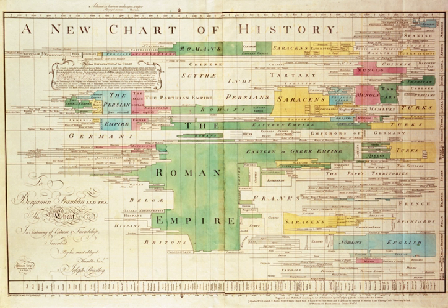Timelines can use any suitable scale representing time, suiting the subject and data. Many use a linear scale, in which a unit of distance is equal to a set amount of time. This timescale is dependent on the events in the timeline.